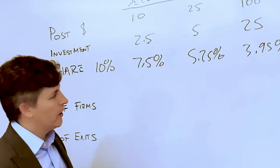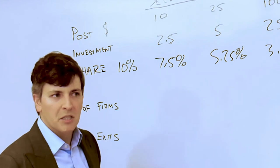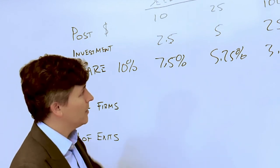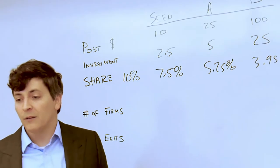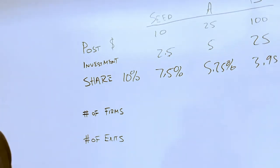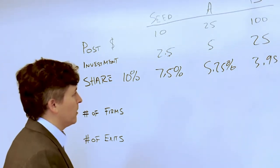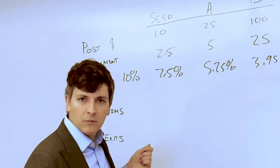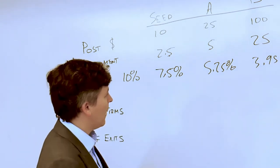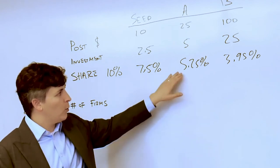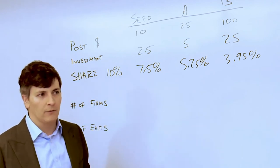Things continue moving along. The firm raises a Series A. The investment amount is five million dollars. The investors believe the post-money valuation after they've put their five million dollars in is twenty five million dollars. You're again diluted and your share after this next round of investment is only five point two five percent of the total equity in the firm.